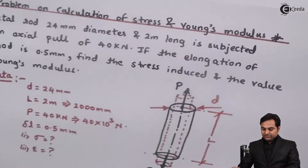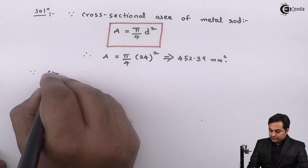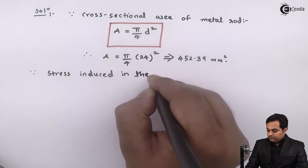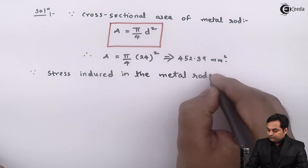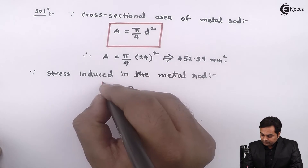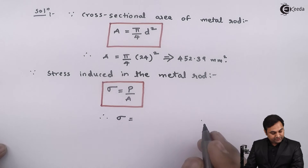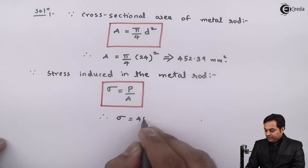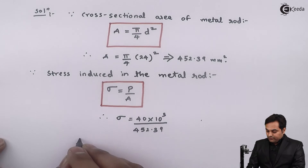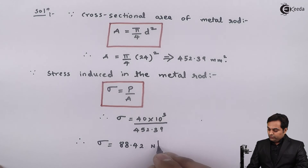The first question is to calculate stress. Using the formula, stress induced sigma is equal to load upon area. Therefore sigma equals load 40 into 10 raised to 3 Newton divided by area 452.39 mm squared.